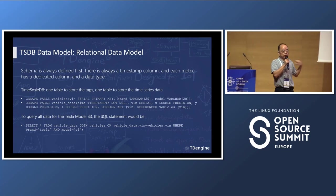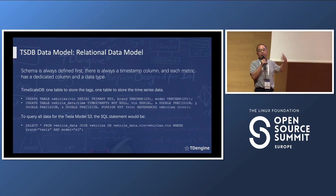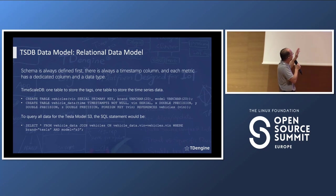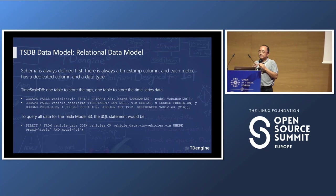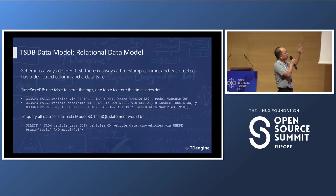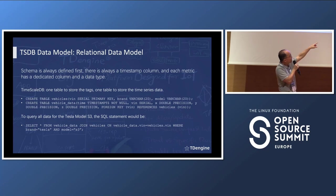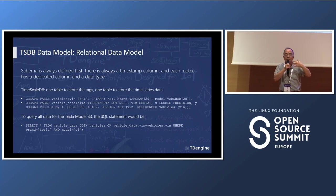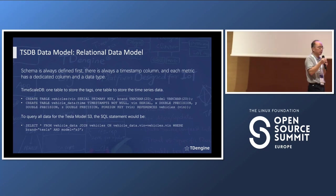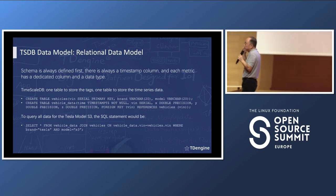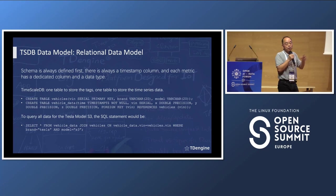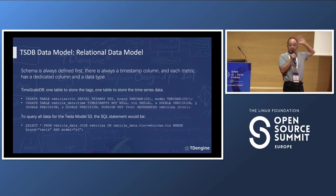There is another model: the relational data model, just like MySQL or Oracle. In this model, schema is always defined first — there is always a timestamp column, and each metric has a dedicated column with a data type. For TimescaleDB, which is based on Postgres, one table stores the tags and another stores the time series data. When you want to query all data for a Tesla Model 3, the SQL statement requires a join between the tags table and the metrics table. QuestDB also uses this relational model.